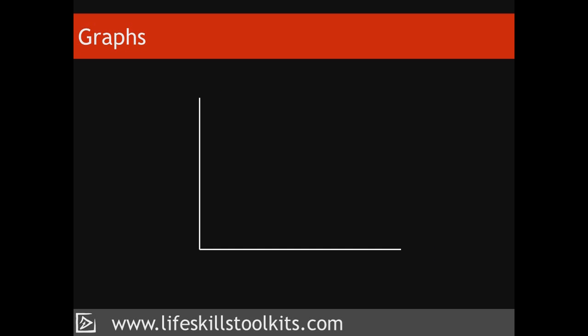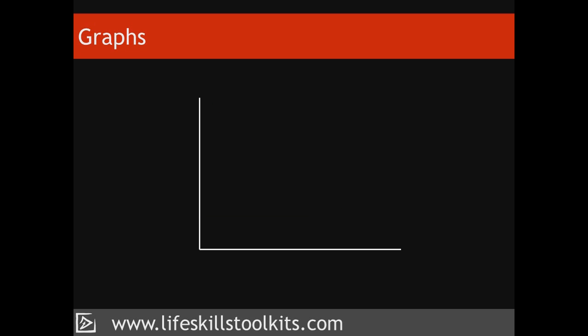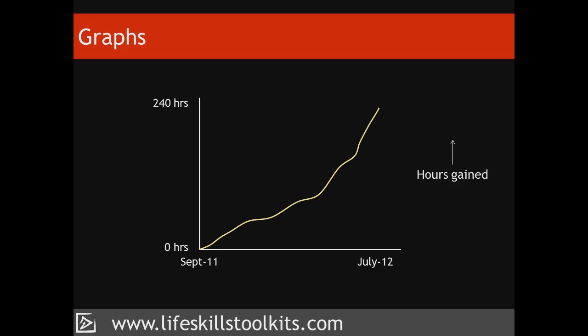Graphs can take different forms. For instance, if we wanted to lose 30 pounds in 3 months, the graph we plot might show a downward slope because we're losing weight, with the x-axis covering a period of 3 months. We might mark on the graph what our target weight might be after 3 months. If we were working to accumulate a total of 240 hours of teaching in a year in order to get our teaching qualification, the graph might show an upward slope with the x-axis covering all the months in an academic year.